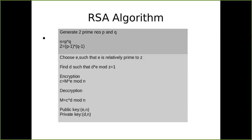A number is said to be co-prime with another if the two numbers share no common factor other than 1. After finding z, we choose a public key e such that e is relatively prime to z. Then we find the private key d such that it satisfies the equation: d × e mod z = 1, meaning d multiplied by e and divided by z gives a remainder of 1.